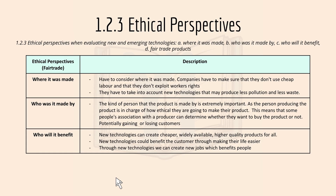Moving on to 1.2.3, which is ethical perspective. This includes where it was made, who it was made by, who it will benefit, and fair trade products. Where it was made means companies have to ensure they don't use cheap labor or exploit workers, which may violate labor law. They must also consider new technologies that may produce less pollution and less waste. The kind of person producing the product is extremely important, as their ethics can determine whether customers want to buy the product or not, potentially gaining or losing customers.